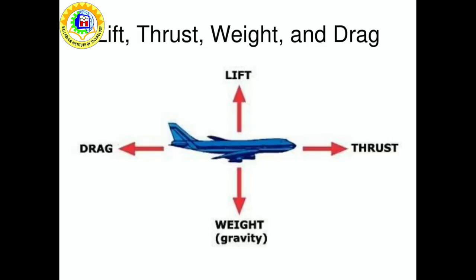The four forces are lift, thrust, drag, and weight. Thrust is a force that moves an aircraft in the direction of motion; it is created with a propeller, jet engine, or rocket. Drag is the force that acts opposite to the direction of motion and tends to slow an object; drag is caused by friction and differences in air pressure. Weight is the force caused by gravity. Lift is the force that holds an airplane in the air, and the wings create most of the lift used by airplanes.